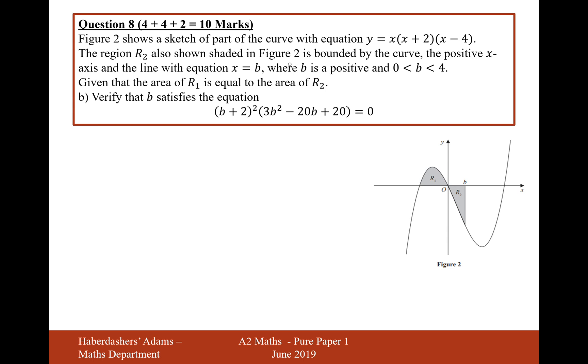Let's move on to part B. The region R2, also shown in figure 2, is bounded by the curve, the positive x-axis, and the line x equals B, where B is between 0 and 4. Given that the area of R1 is equal to the area of R2, show that B satisfies this equation. We need to do the integral from 0 to B of x cubed minus 2x squared minus 8x dx, and that's going to equal minus 20 over 3.